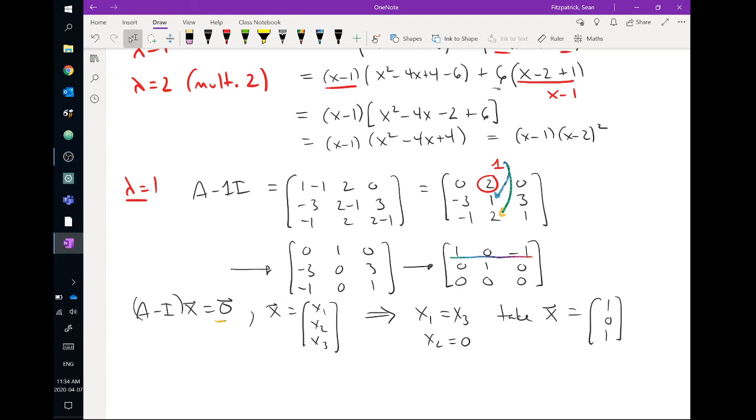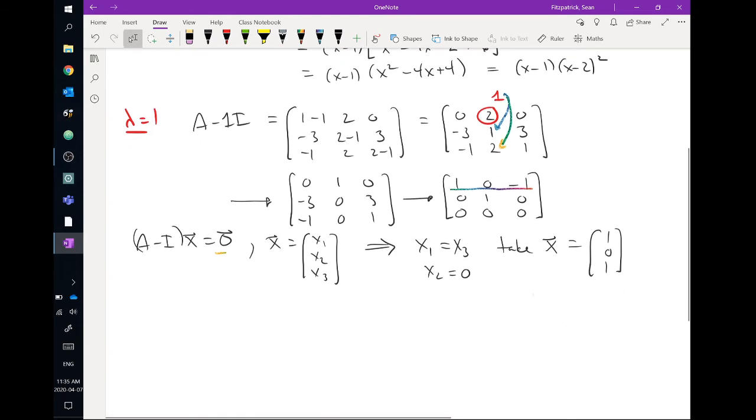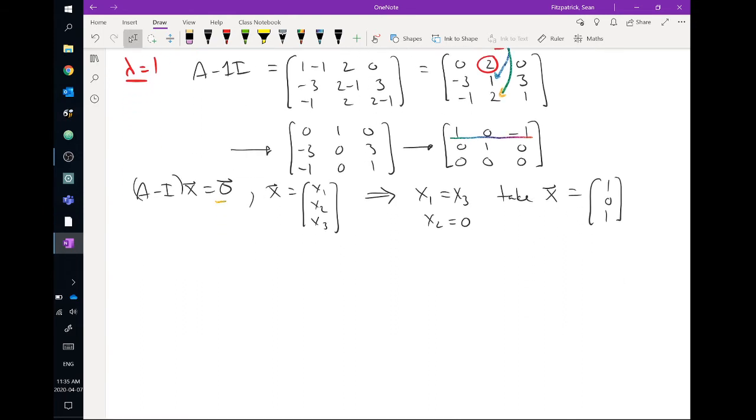So what we'll do is we'll take x to be this vector, 1, 0, 1, okay? And we leave it at that. We could get a unit vector if we wanted to, but we'll leave it as 1, 0, 1. We choose, keep our numbers simple. So we chose x3 to be 1, set x1 equal to x3, x2 is 0. Okay, so there's our eigenvector corresponding to that first eigenvalue.